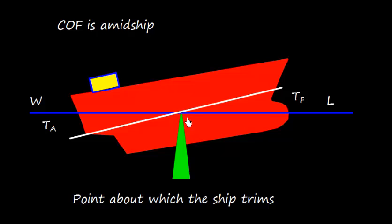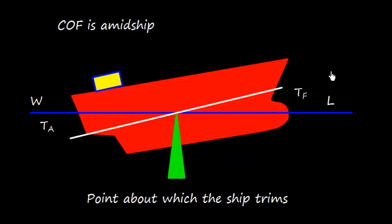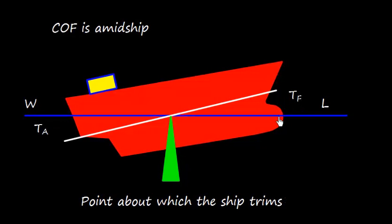Since the center of floatation is at midship, the change in the forward draft is TF. Initially the draft was at one level, but after shifting the weight, the draft changes. So TF is the change in forward draft. Similarly, TA is the change in aft draft. Since the center of floatation is at midship, the change in draft forward TF and the change in draft aft TA will be equally divided, so TA equals TF.